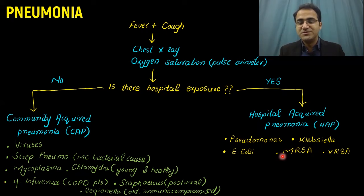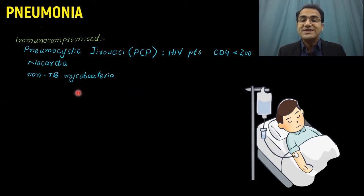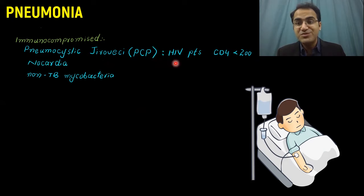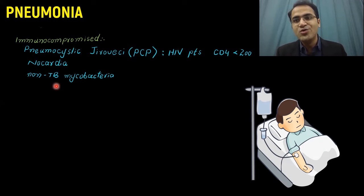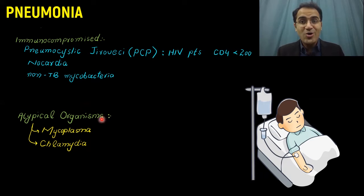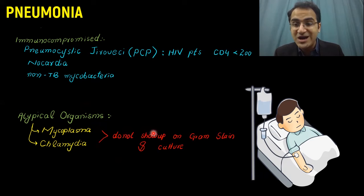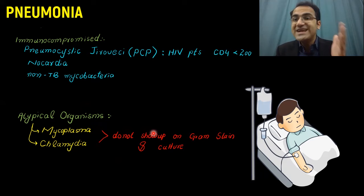In immunocompromised people, certain organisms can cause pneumonia. Pneumocystis jirovecii (PCP) causes pneumonia in HIV patients whose CD4 count is less than 200. Nocardia can also cause pneumonia. Non-TB mycobacteria like Mycobacterium avium can cause pneumonia in immunocompromised patients. There are also atypical organisms including mycoplasma and chlamydia. These are called atypical because they do not show up on gram stain or normal cultures — they need special media and special staining.